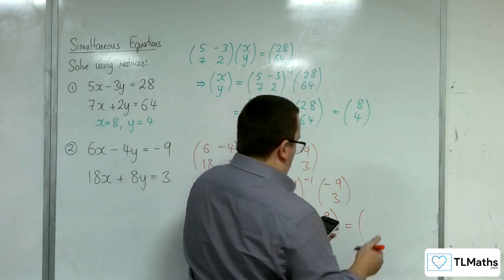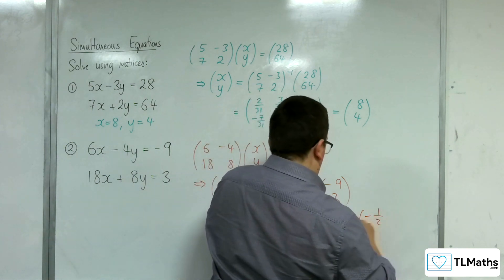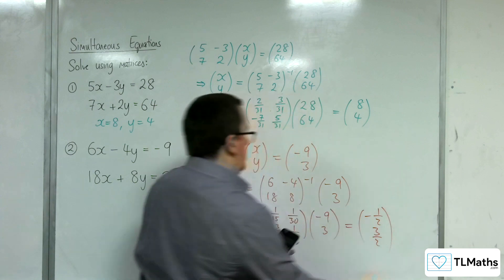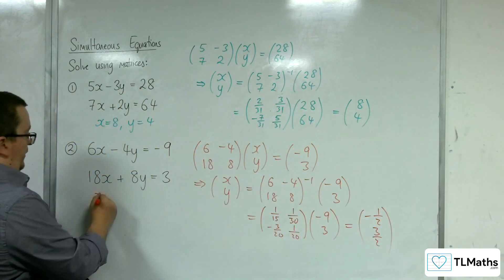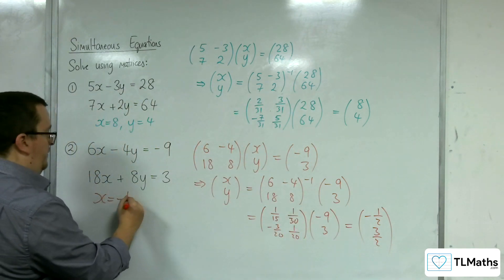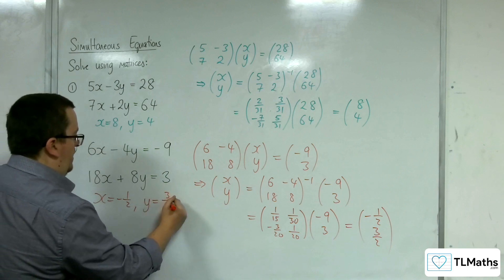We're getting -1, 1/2 and 3/2. So solutions: x is -1/2 and y is 3/2.